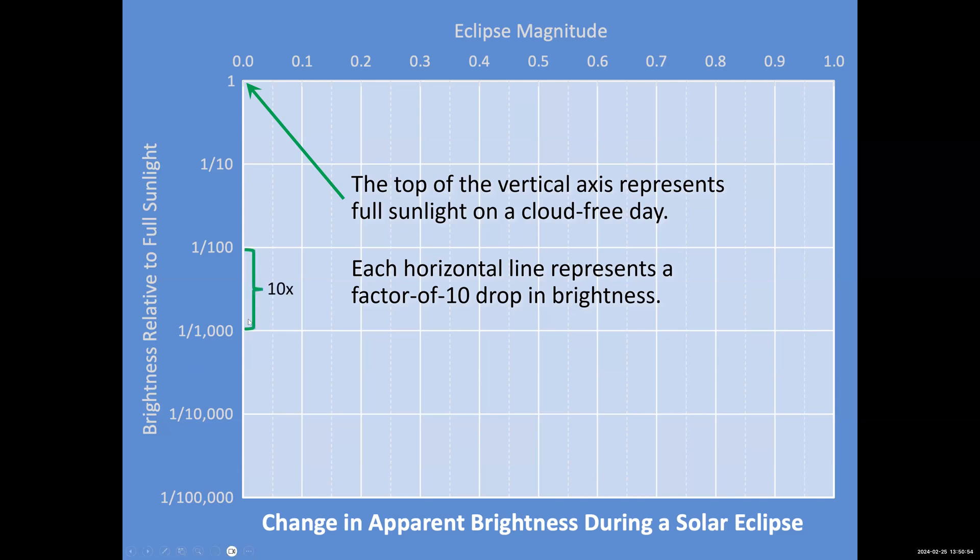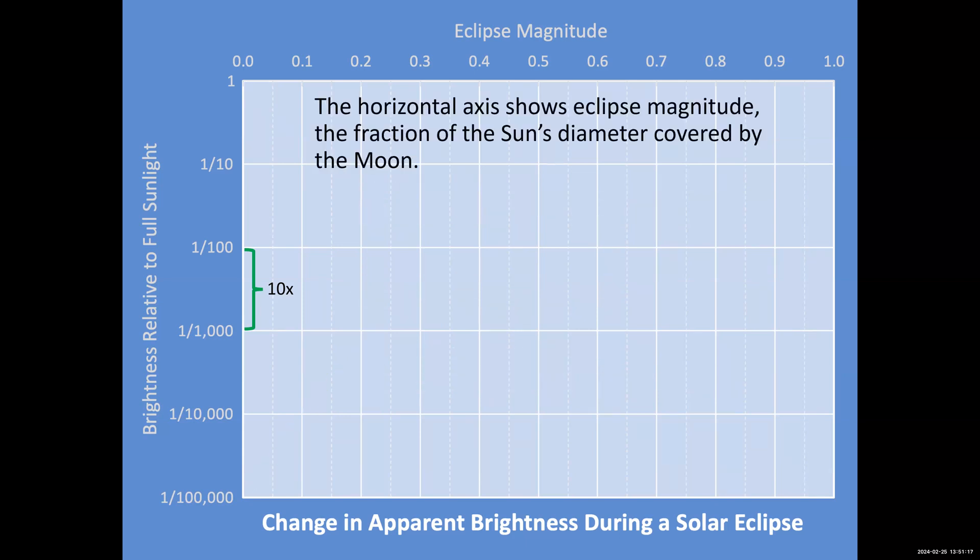You can see this is a 10 times drop with each of these blocks. The bottom vertical axis represents one hundredth of full sunlight. This is the level that the sunlight should drop to when the sun is totally eclipsed during totality. Now the horizontal axis shows the eclipse magnitude. This is the fraction of the sun that is blocked out. So this would be a 10 percent eclipse, 20 percent, 30 percent, all the way to 90 and 100 percent eclipsed.